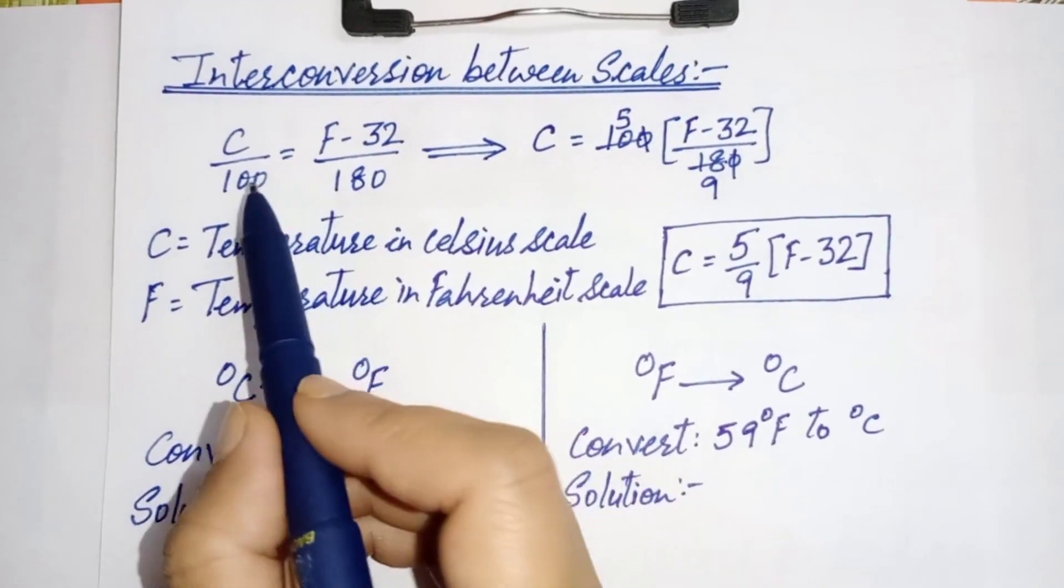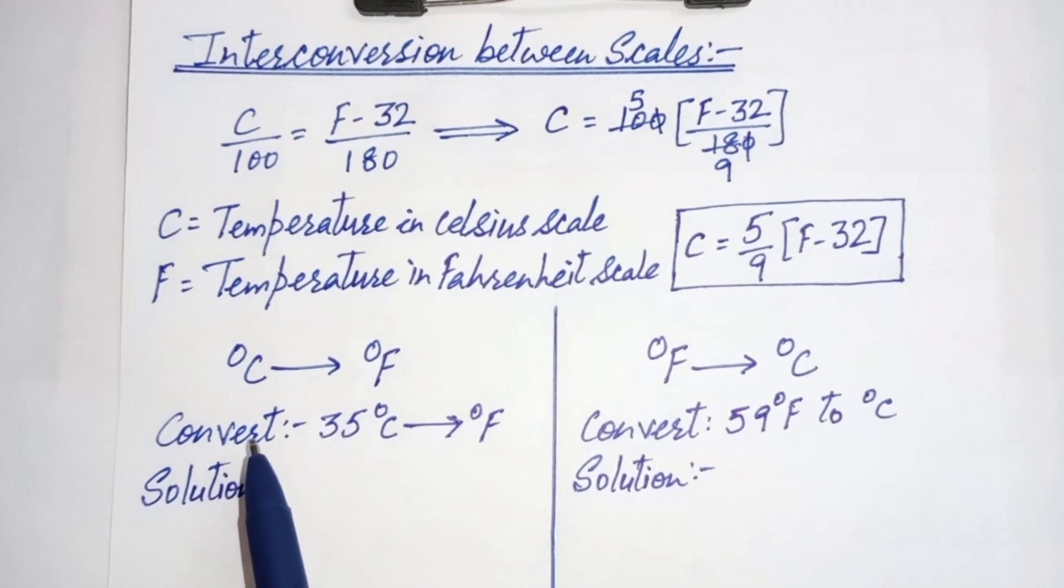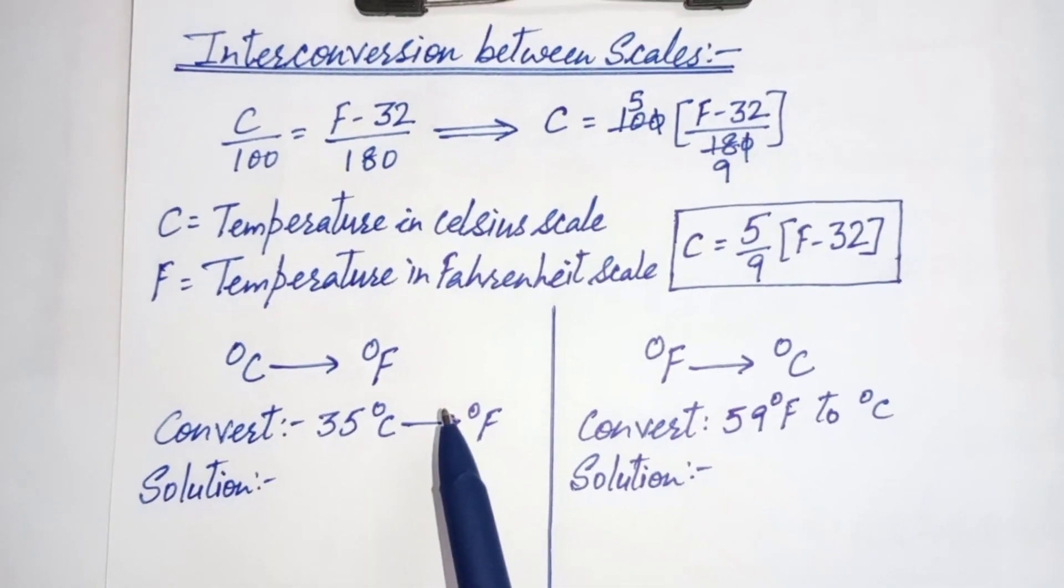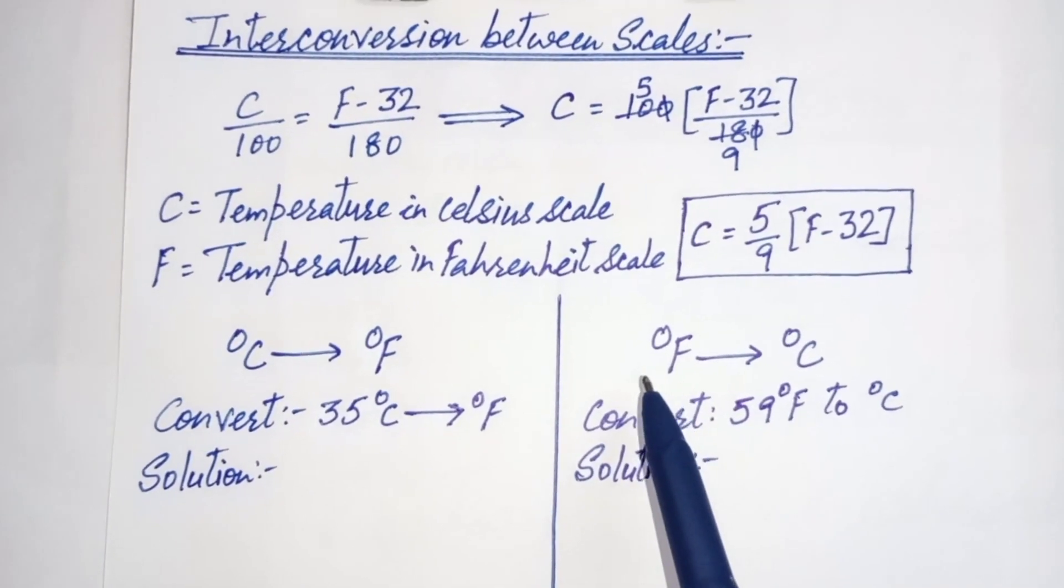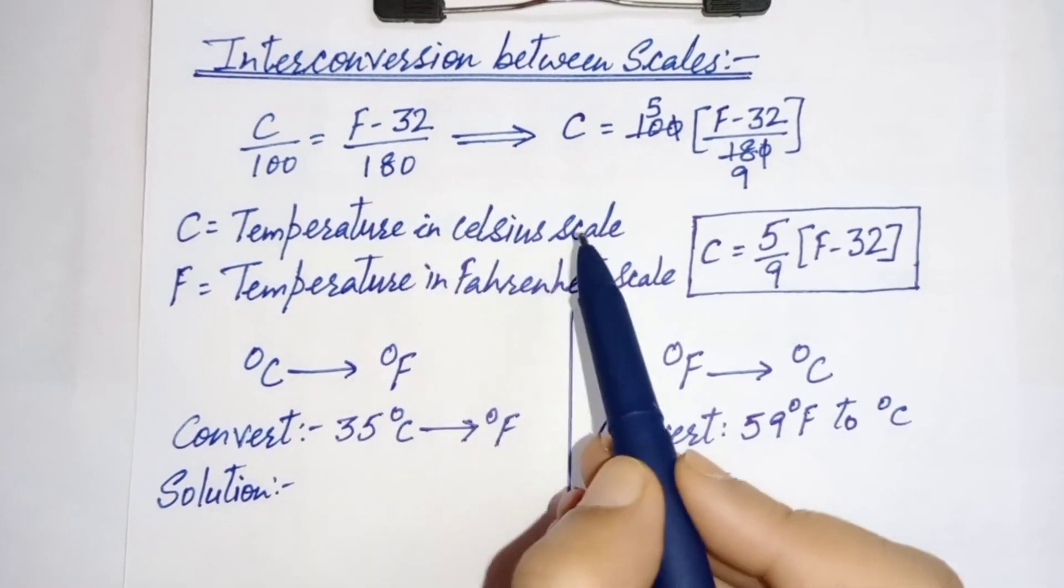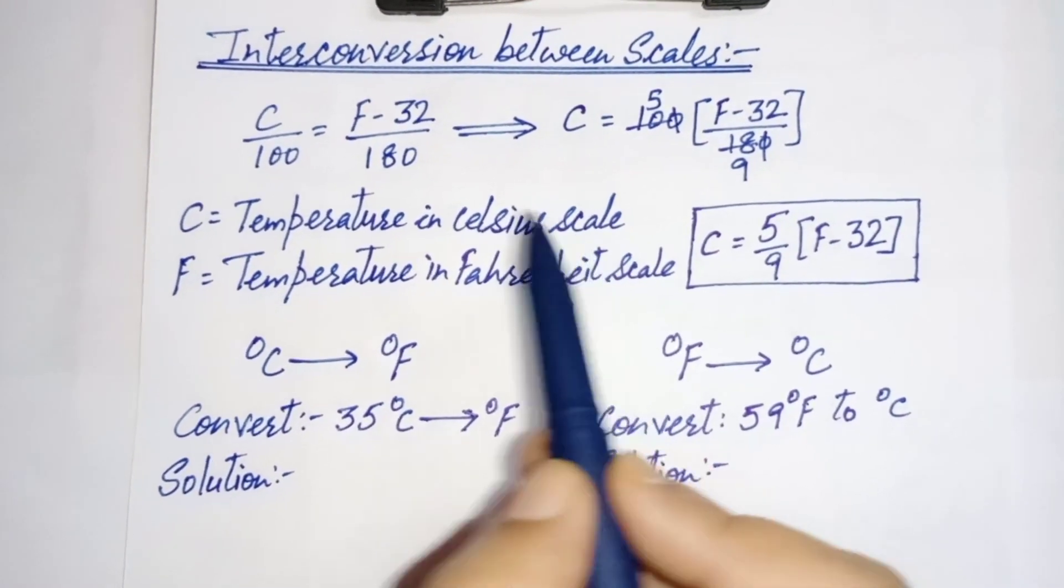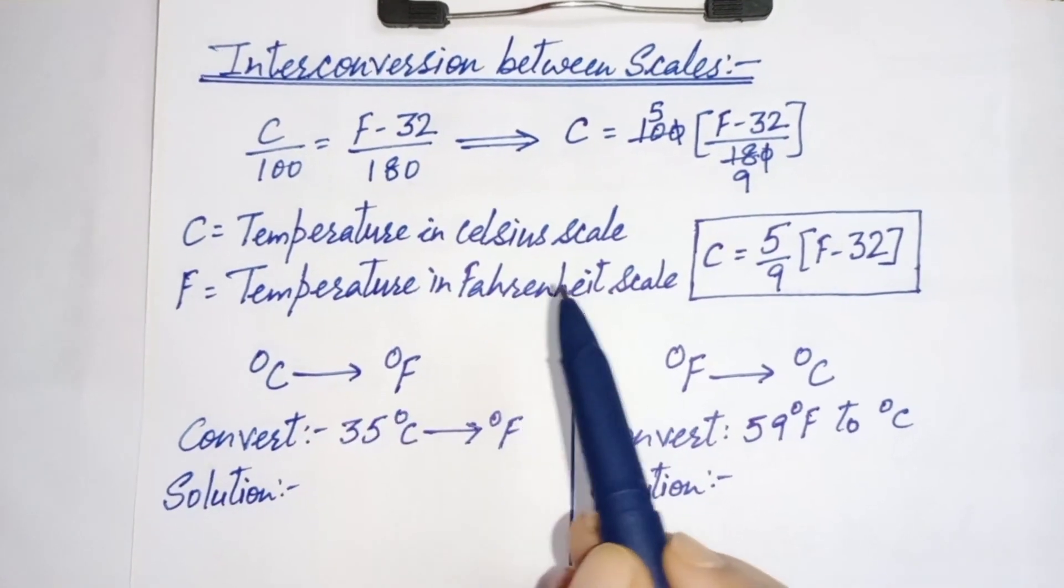The relationship used to convert Celsius scale to Fahrenheit scale or vice versa. Here C is temperature in Celsius scale and F is temperature in Fahrenheit scale.